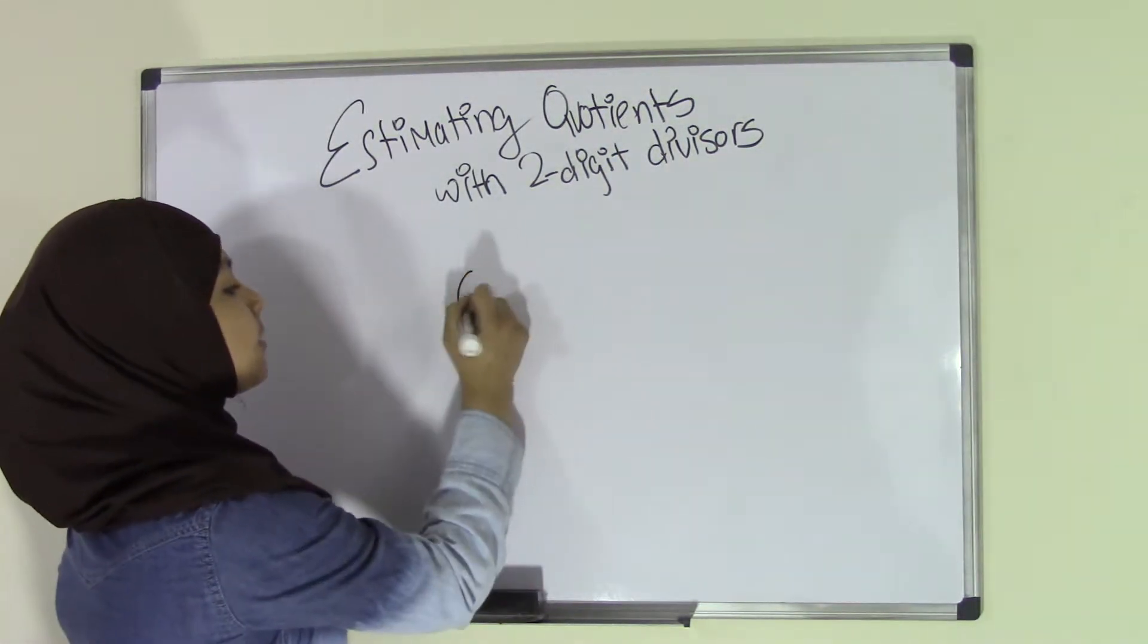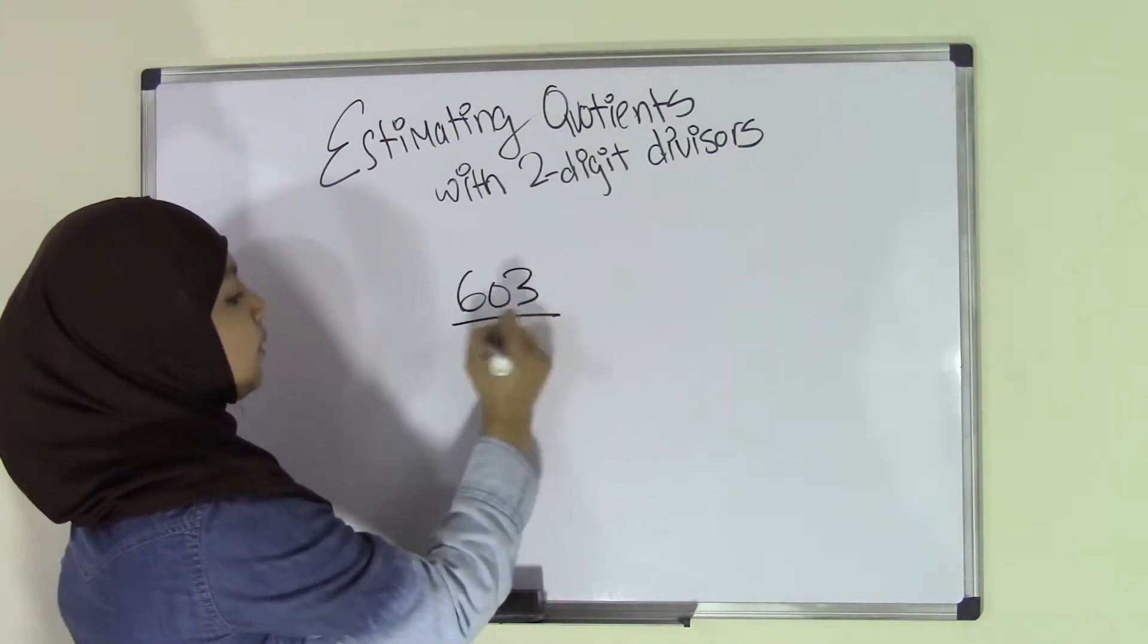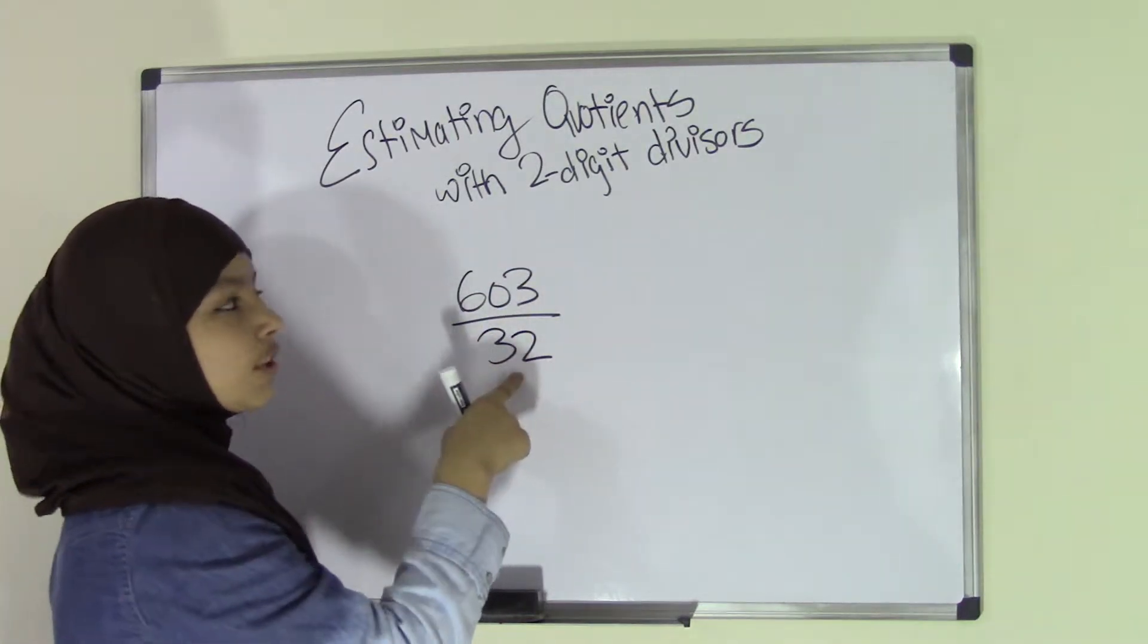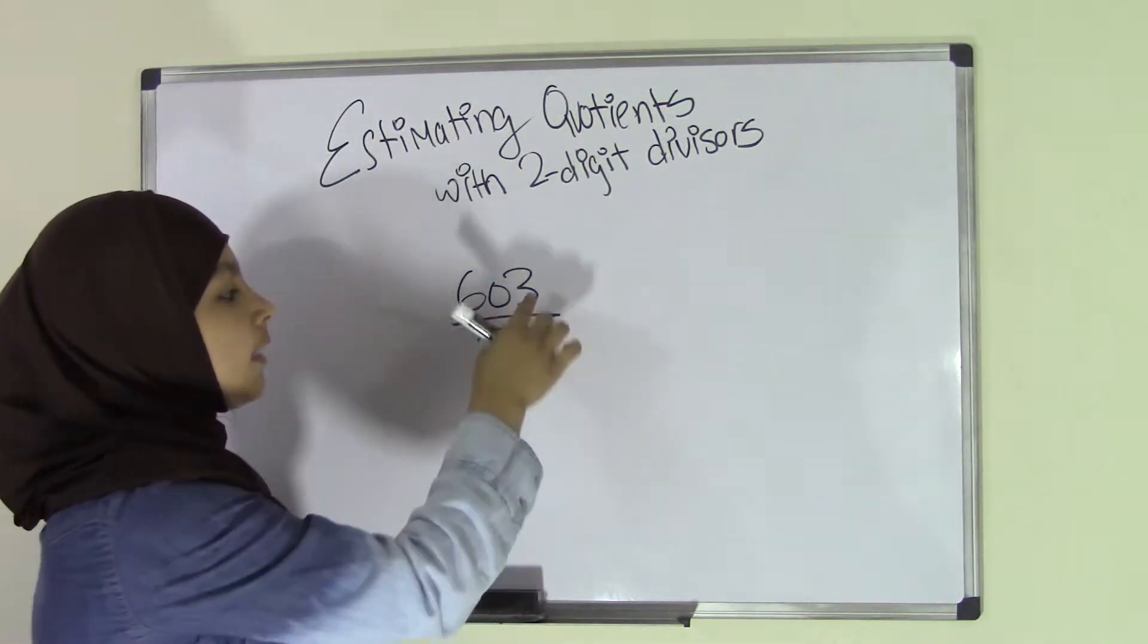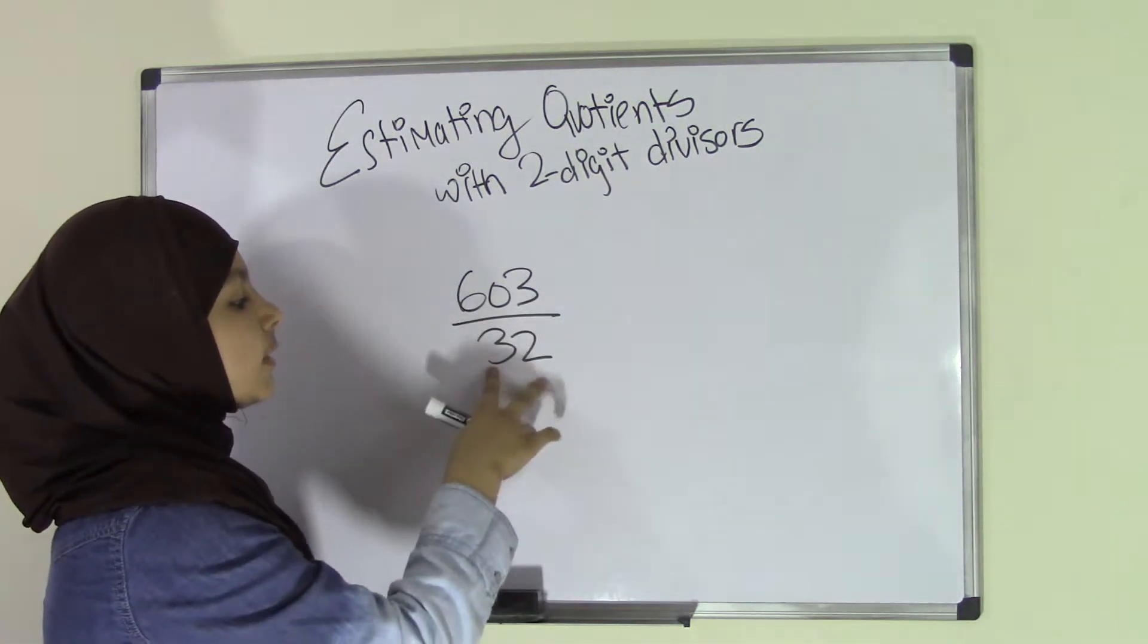So let's say we have 603 divided by 32. 32 is a two-digit divisor because divisors are the numbers that you're going to divide it by, and 603 is the dividend, so that means this is a two-digit divisor.